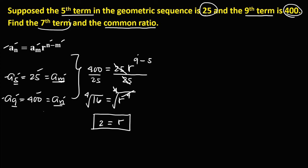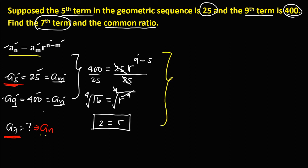Then to find the 7th term, that's a sub 7. If we're going to use these two terms, so a sub 7 is the last term. From this formula, to solve for a sub 7, or the last term: a sub n is a sub 7, so we have a sub 7 equals a sub m, that's 25, then times r — r is 2 — to the power n. Since a sub n is equal to a sub 7, so n is equal to 7. Then minus m, so m is equal to 5.